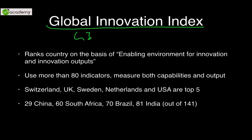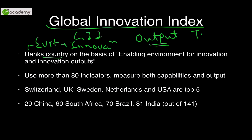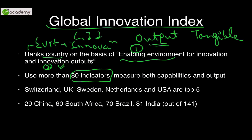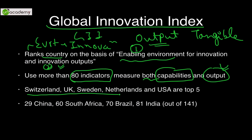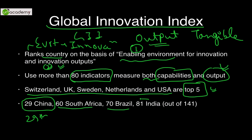The Global Innovation Index (GII) ranks countries on two main things: first, the environment a country provides for innovation; and second, the tangible output of those innovations. It uses more than 80 indicators and measures both capabilities and outputs. The top five countries are Switzerland, UK, Sweden, Netherlands, and USA. Among BRICS nations, China is ranked very high at 29th, South Africa and Brazil are also high, while India ranks lower out of 141 countries.